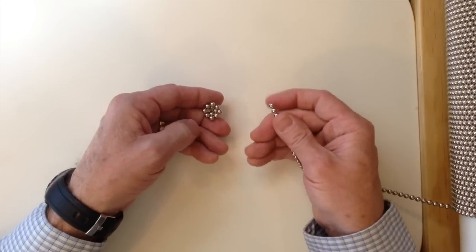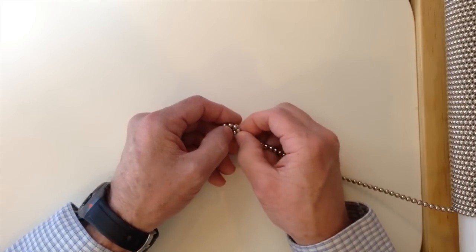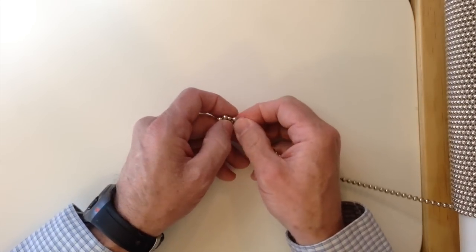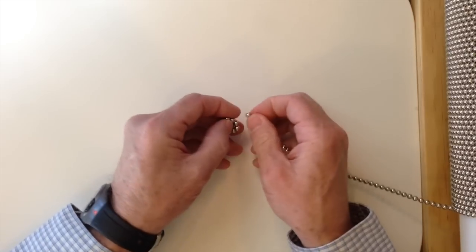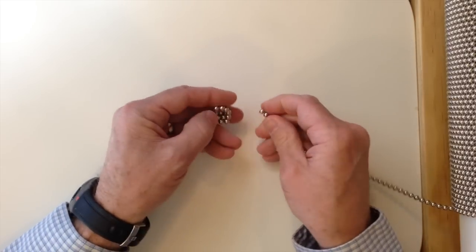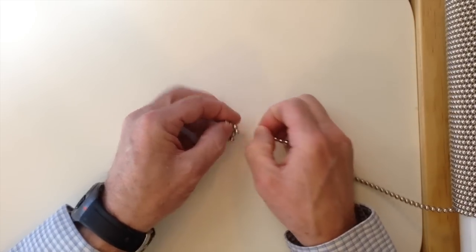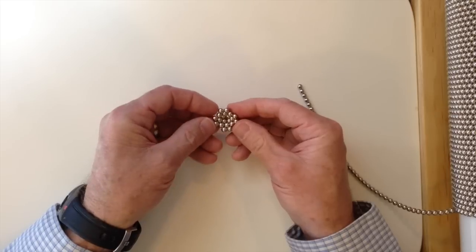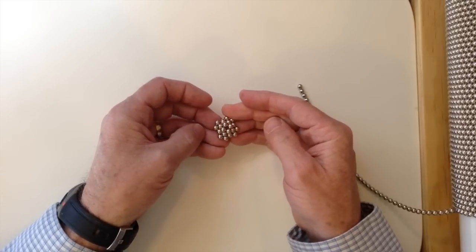Then add two magnets to each side. Just like that, which extends the bowl out a little further.